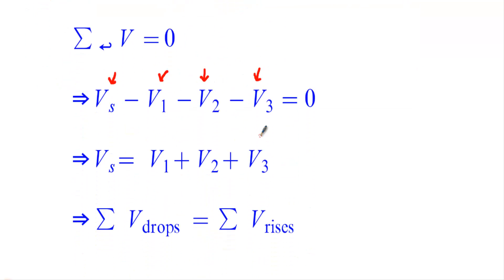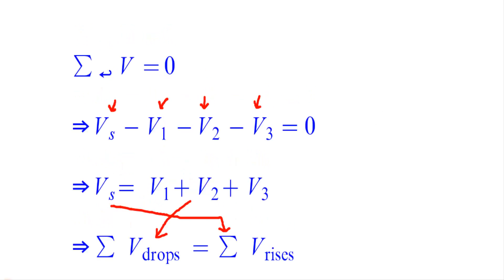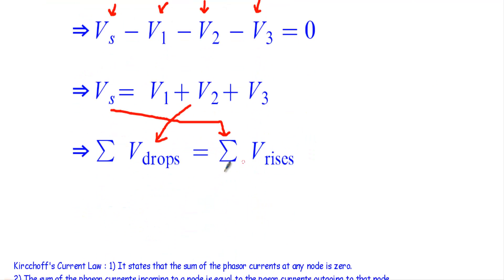Taking V1, V2, and V3 to the right side, I get Vs equal to V1 plus V2 plus V3. This confirms that the phasor voltage supplied equals the sum of phasor voltage rises in this circuit.